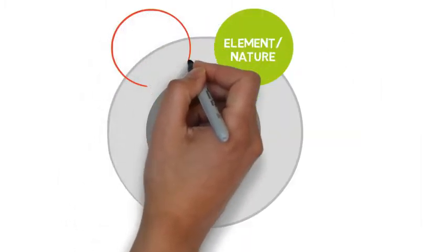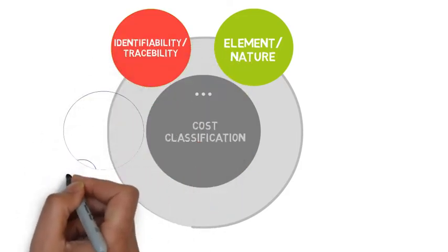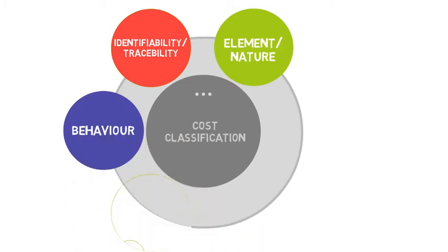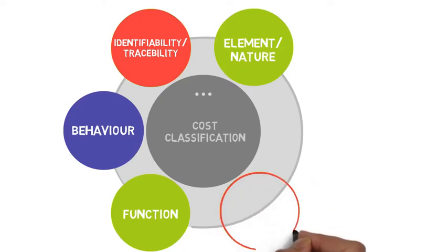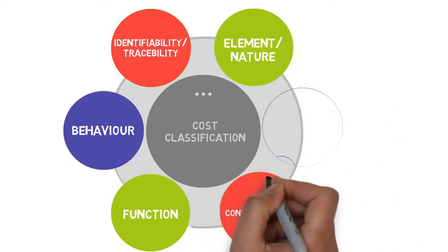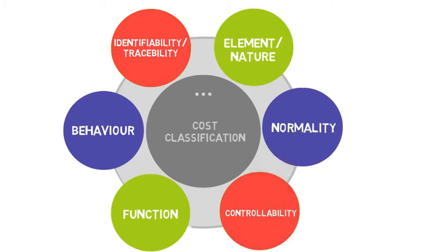Cost can be classified into six categories. First, cost can be classified by element or nature. Second, cost can also be classified by its traceability or identifiability. Behavior is the next category of cost classification. Next is function. Cost can be classified by controllability. Lastly, cost can be classified by normality.